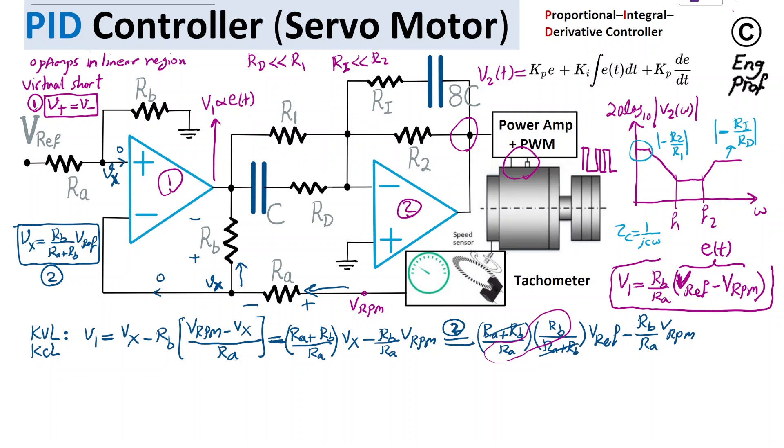By proper selection of Ri and Rd, we can define this response at the high frequency range, and by proper selection of R2 and R1, we can control the response here. The portion defined by integrator is this portion, and the portion defined by derivative is this portion.